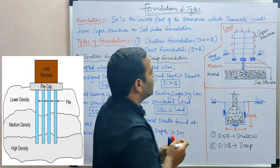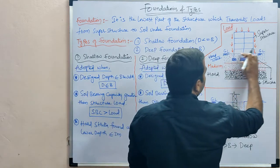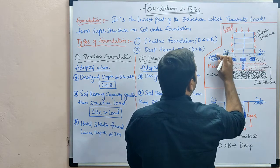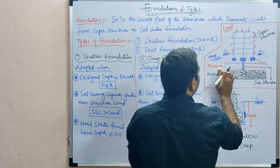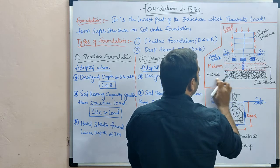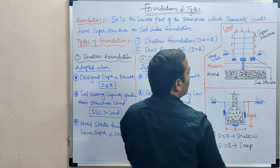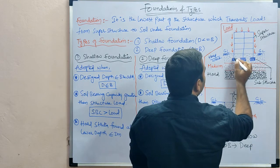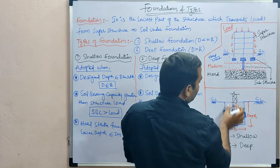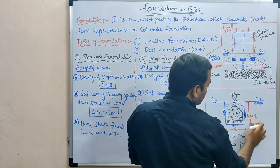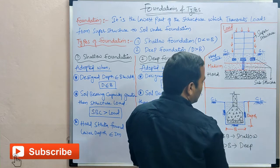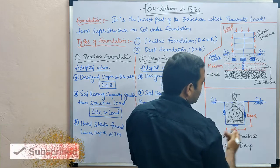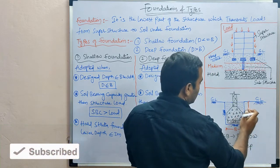Here I have taken three different zones of soils. The first zone is a hard or weak zone, the second one is a medium type, and the third one is a hard zone where hard rock or hard strata is found. From the ground level down to the bottom of the footing excavation is called the depth of foundation.